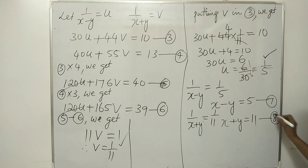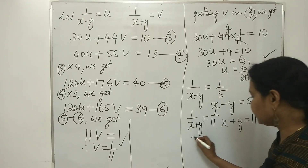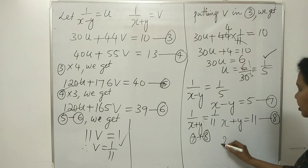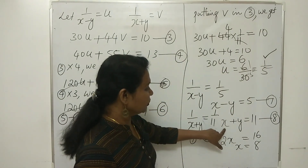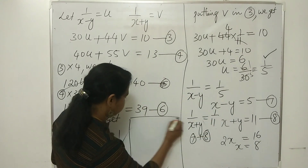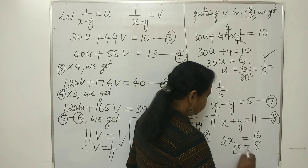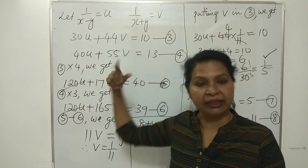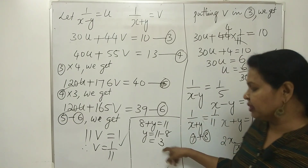Adding equations 7 and 8: 2x equals 16, so x equals 8. Substituting x equals 8 into x plus y equals 11, we get 8 plus y equals 11, so y equals 3. Therefore x equals 8 and y equals 3. The conclusion is that the speed of the boat in still water is 8 km per hour and the speed of the stream is 3 km per hour.